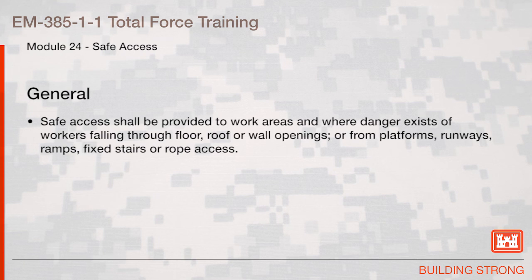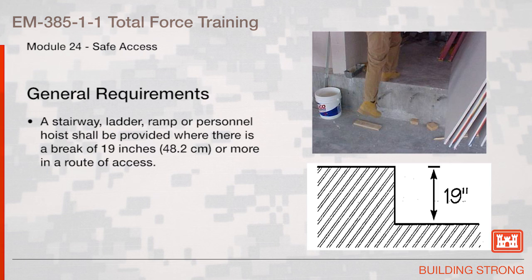General: Safe access shall be provided to work areas where the danger exists of workers falling through floor, roof, or wall openings, or from platforms, runways, ramps, fixed stairs, or for rope access. A stairway, ladder, ramp, or personnel hoist shall be provided where there is a break of 19 inches or more in a route of access.